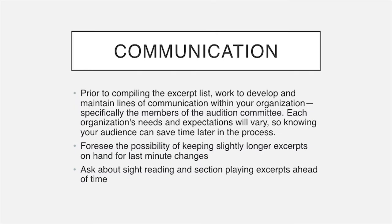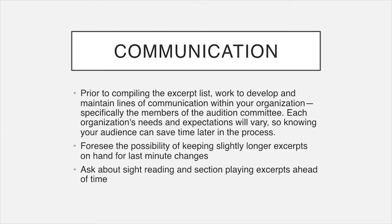The basics for audition excerpts really comes down to communication within your organization. Prior to compiling the excerpts list, you need to be developing and maintaining lines of communication. Figure out who on the committee is going to be the main person coordinating the list of excerpts, and who within your organization is the main person communicating with them — is it a music administrator, a personnel manager? Once you know who your people are, you can know the pipeline to ask any questions that need to be asked, including whether there are problematic errata that a music director or principal violin will want to have a say in before the librarian corrects something.